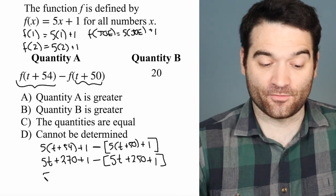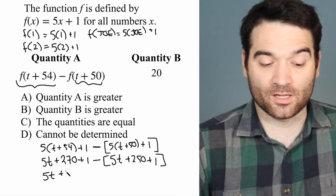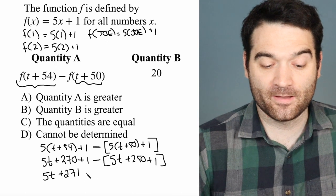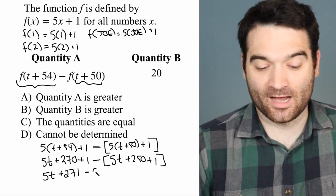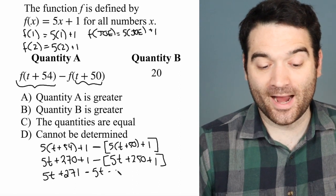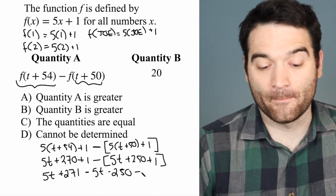I can combine these terms together. So 5t plus 271 minus, I'll distribute this negative in, 5t minus 250 minus 1.